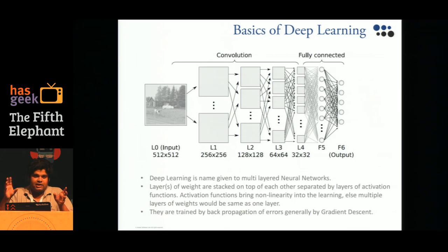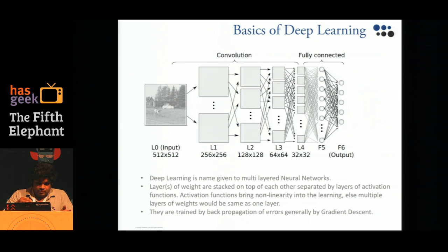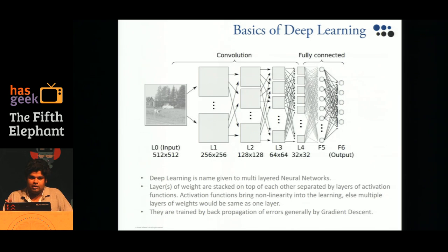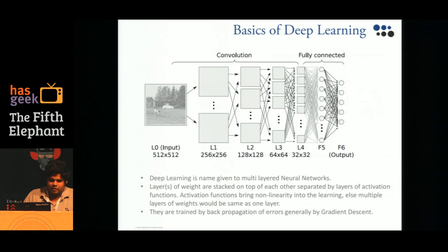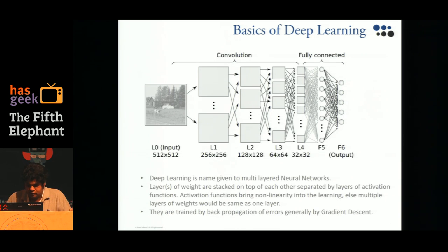That's how a neural network is structured. There are different architectures I'll describe in the next slide. Neural networks are typically trained using back propagation, and most of the networks we use are trained using gradient descent.